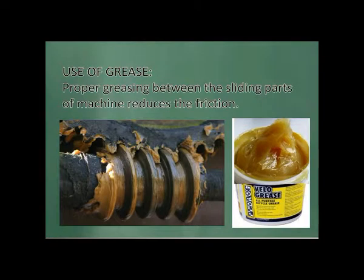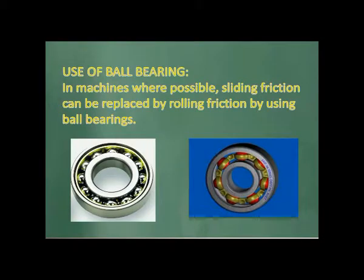Use of Grease: Proper greasing between the sliding parts of machines reduces the friction. Use of Ball Bearings: In machines, where possible, sliding friction can be replaced by rolling friction by using ball bearings.